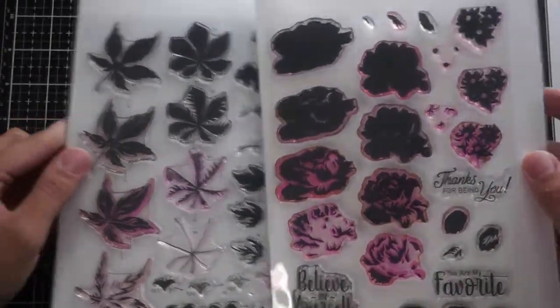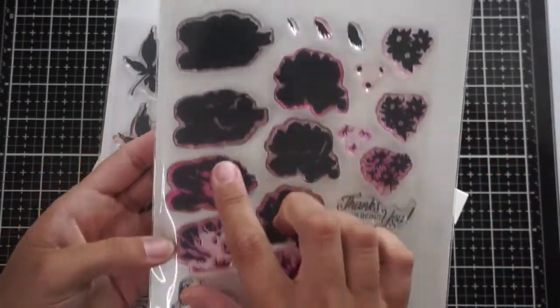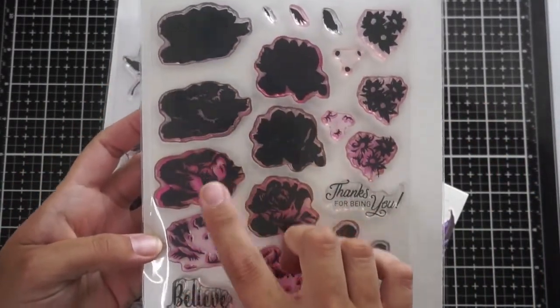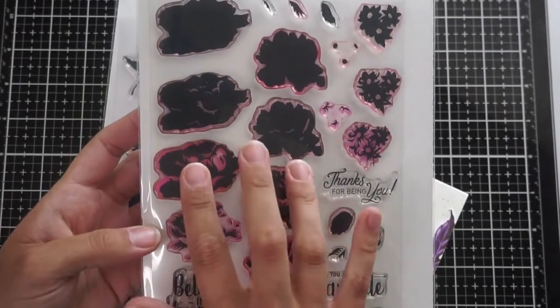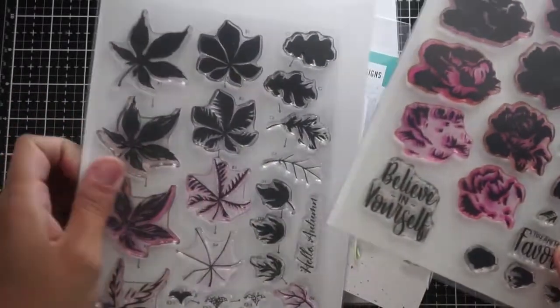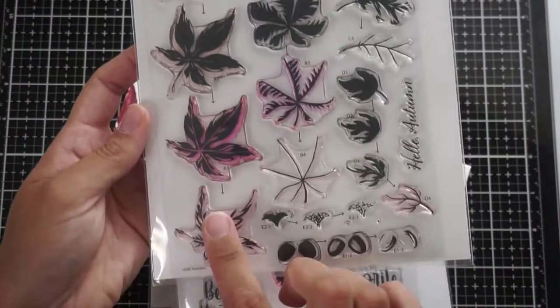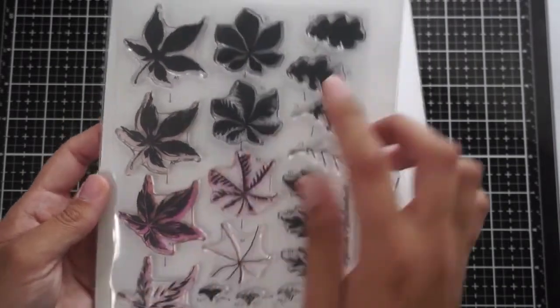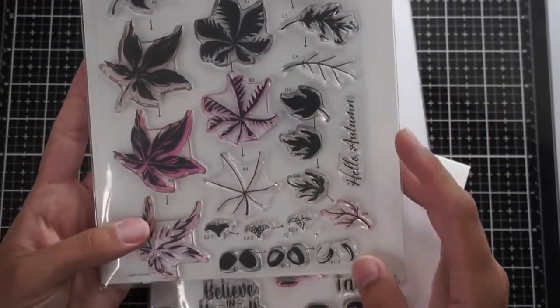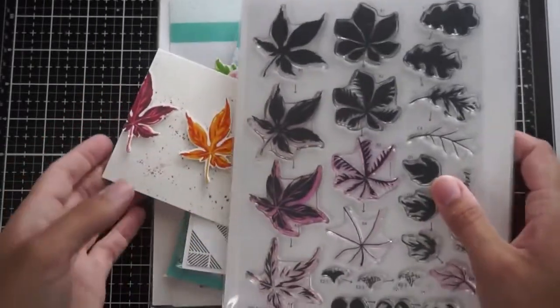And here are the two sets. This is the Rose Garden set, and it's got two different roses in the set and each rose has four layers. And then you've got some flowers there off to the right and some leaves also included in the set. And this is the Hello Autumn set again with four layers and two leaves or two main leaves. And then we've got some smaller leaves and some acorns there at the bottom.